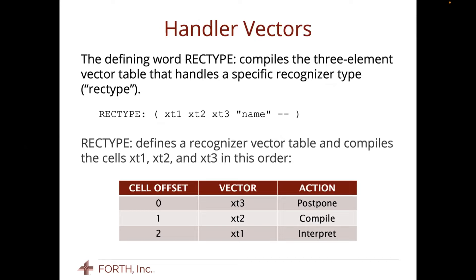Here is rec-type colon, which I believe goes back to Matthias' original proposal and is also used in other systems. It compiles the three-element vector table that handles a specific recognizer type — a rec-type. It takes the three execution tokens, grabs the name from the input stream, and defines a word that's just a vector table: it's literally create, comma, comma, comma. The order of those is important: if you take state and add two to it, you get a cell offset of zero or one, which is exactly correct for the postpone and compile behaviors. Brad is nodding his head — he appreciates the elegance of this lovely little shortcut.